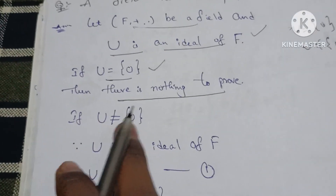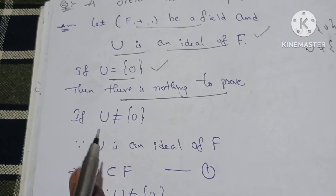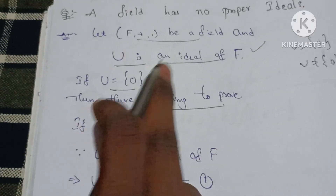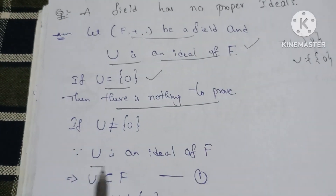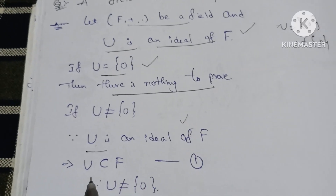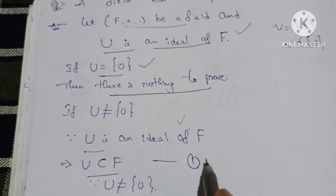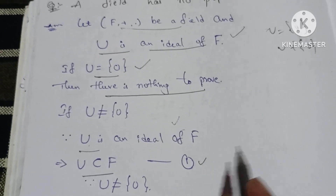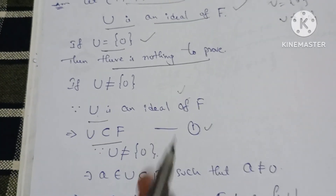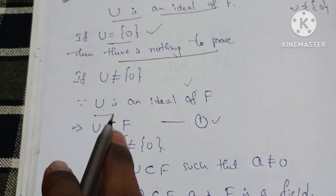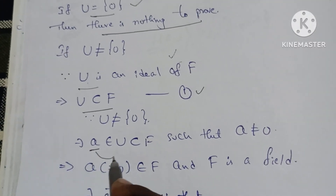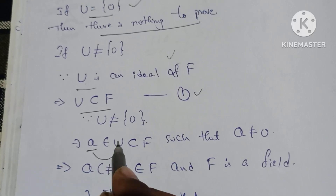If U is not equal to 0, then U is an ideal of F. Since U is an ideal of F, U is a subset of F. Since U is non-zero, I will pick an element — let a belong to U.